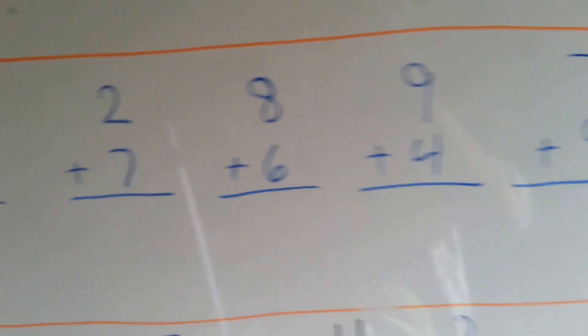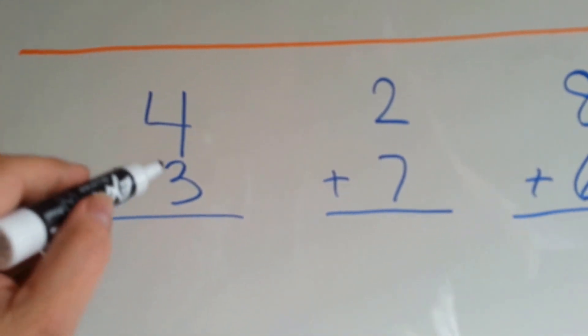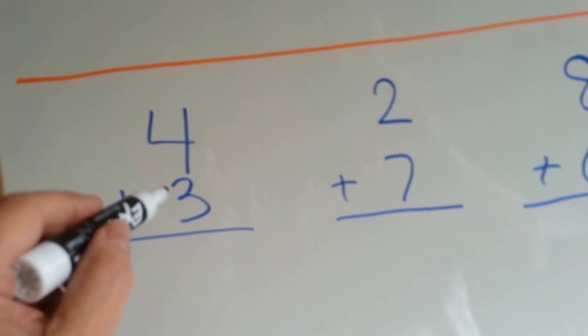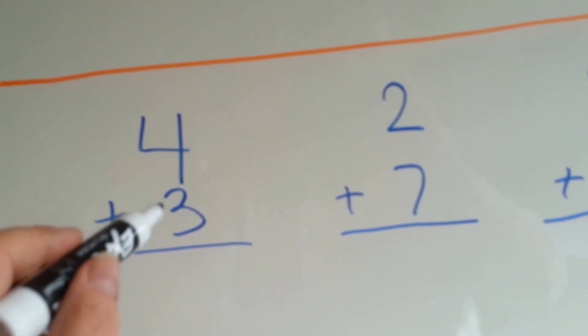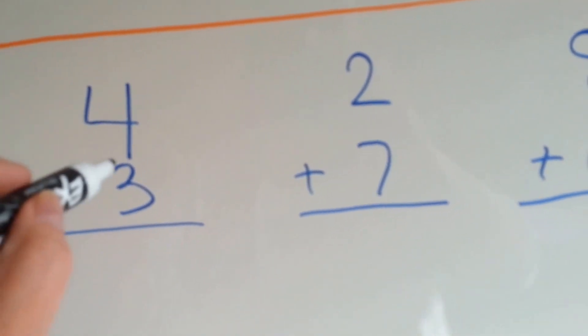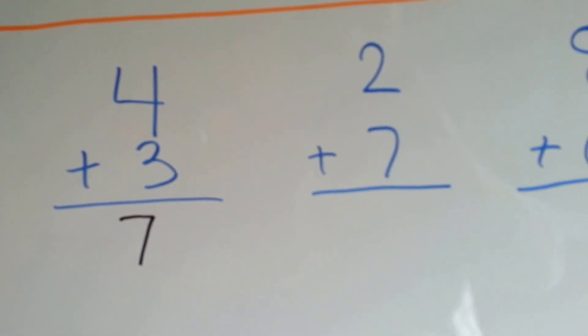Let's look at these easy addition ones. 4 plus 3. 4, 5, 6, 7. Did you know you could do that with the number 3? It has 3 bumps here, so you can just count those 3 bumps when you add. 4, 5, 6, 7. 4 plus 3 is 7.